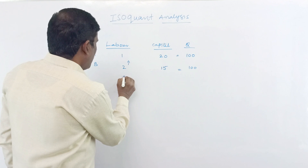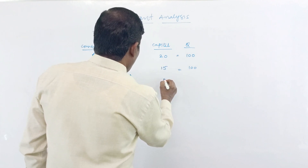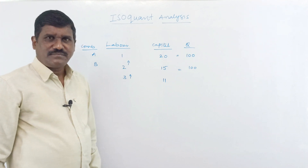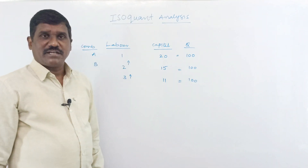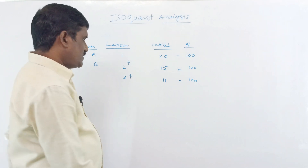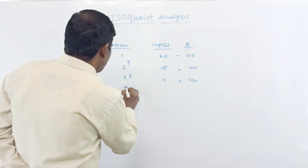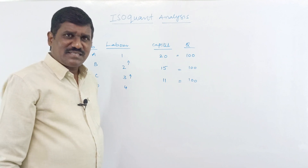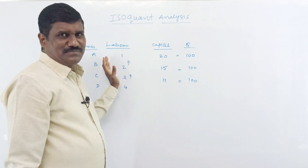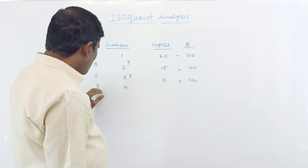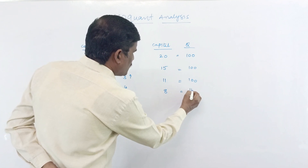Then combination D: the labor increases and the capital decreases. The labor is 4 and the capital is 8. Here also 100 quintals. Then combination E: the labor increases further and the capital decreases to 6. Here also 100 quintals. So the labor keeps increasing while capital keeps decreasing, yet production remains 100.